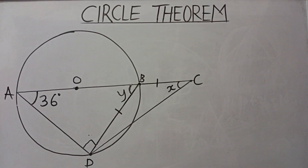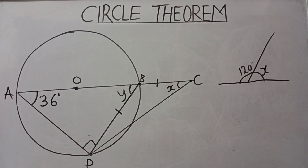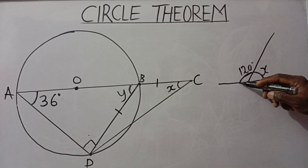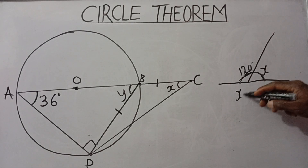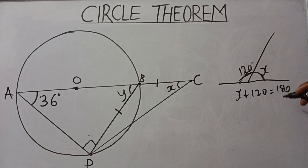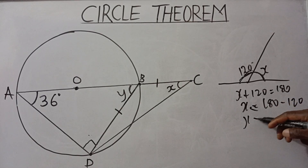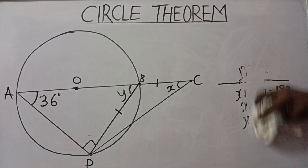If you have an angle and you are asked to find angle x, we use what we call the angle on a straight line. Any angle formed on a straight line gives you 180 degrees. For example, if one angle is 120 degrees, then x plus 120 equals 180, so x equals 180 minus 120, which gives 60 degrees.